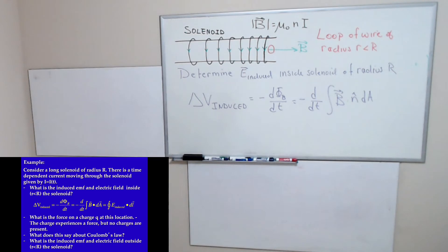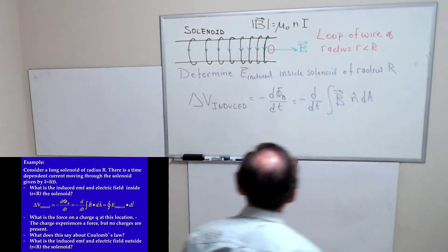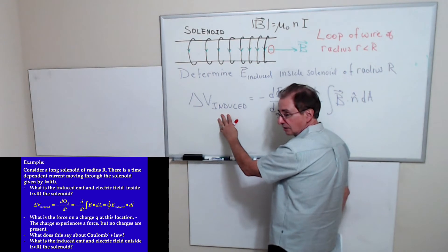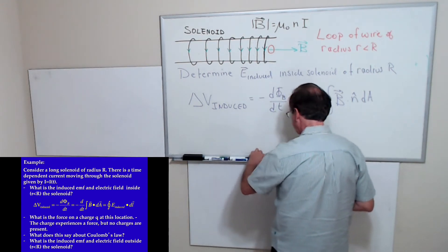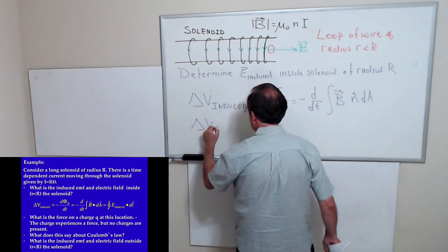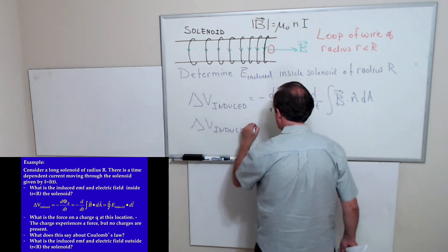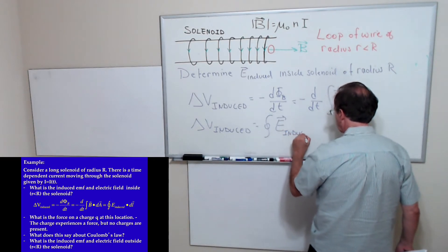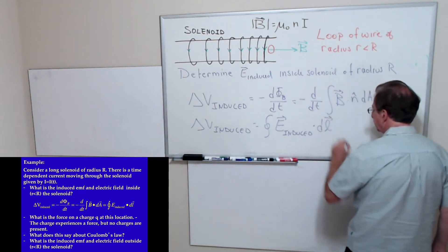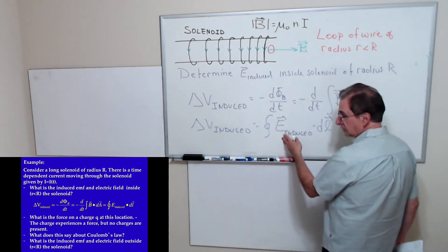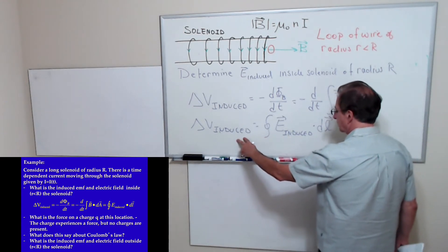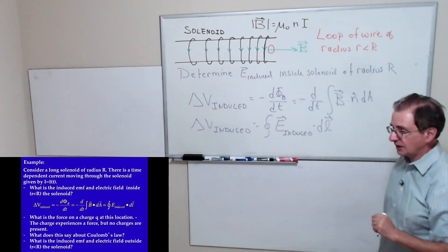This field will exist in the absence of any charges, and this field is not conservative. This induced EMF — this induced voltage — which is the work done per unit charge, can be written as the integral around a closed loop of the induced electric field dotted with dL. When we did electrostatics, this electric field was static and this integral was zero. In this particular case, this integral is not zero — the work per unit charge around the closed path is not zero.